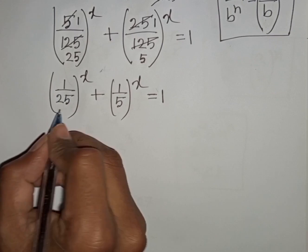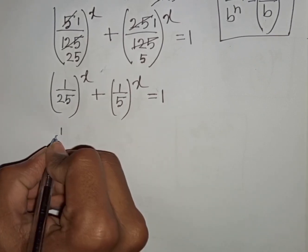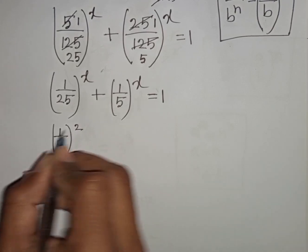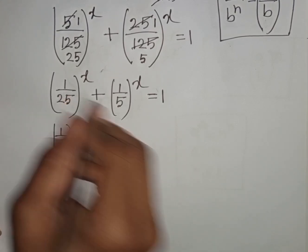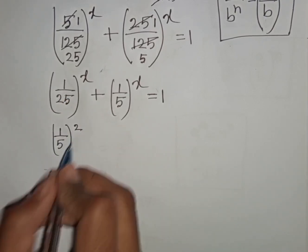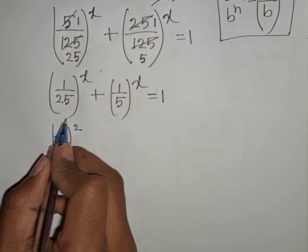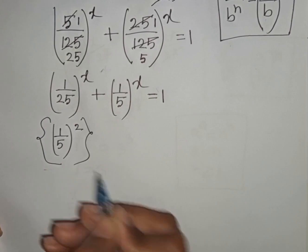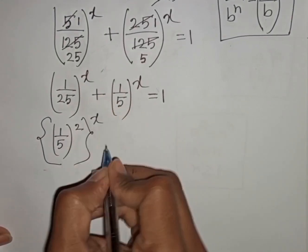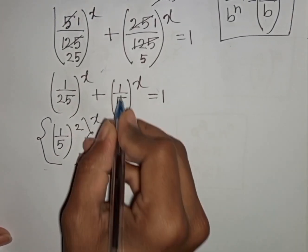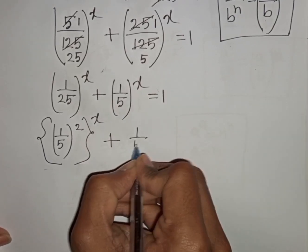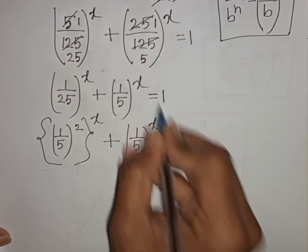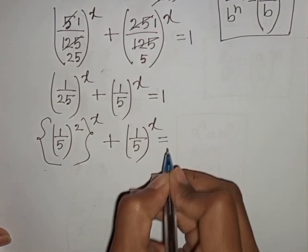Now 1 over 25 can be written as (1 over 5) bracket power 2, since 1 over 5 squared equals 1 over 25. Then this first bracket can be written as the second bracket raised to the power of x: (1 over 5) bracket power 2, bracket power x, plus (1 over 5) bracket power x is equal to 1.